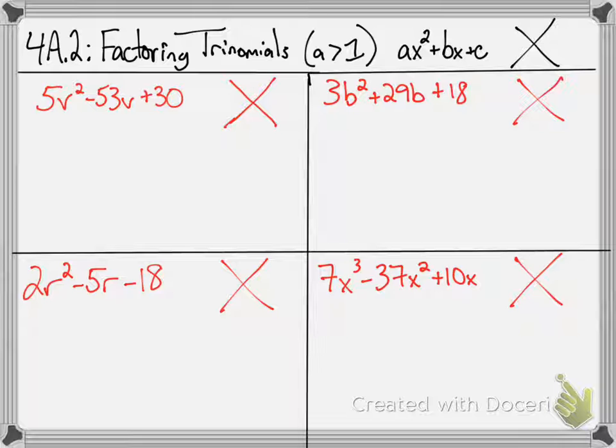So, in a previous lesson, you learned how to factor trinomials in which the coefficient in front of the x squared was 1, and that was mostly just guess and check, multiply c, add to b, figure out your two numbers.